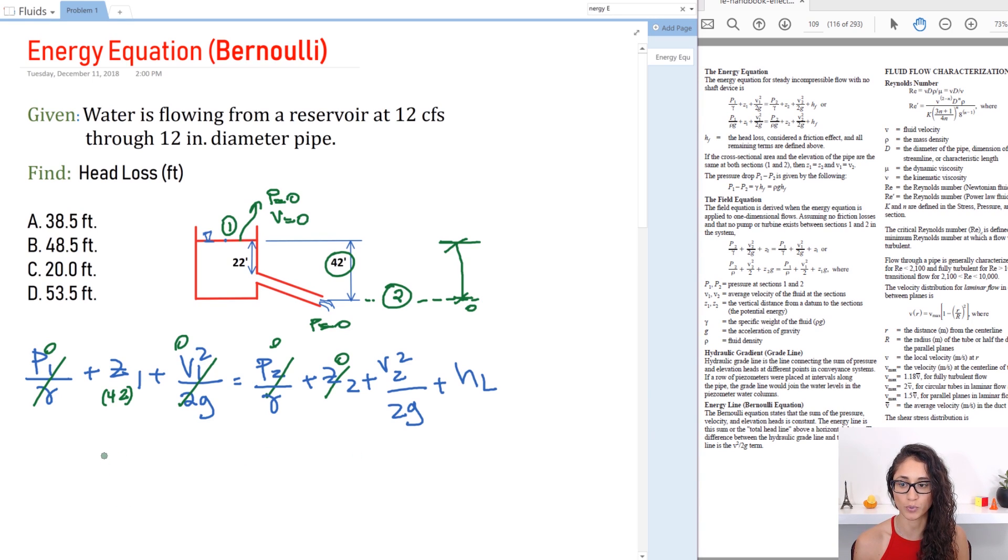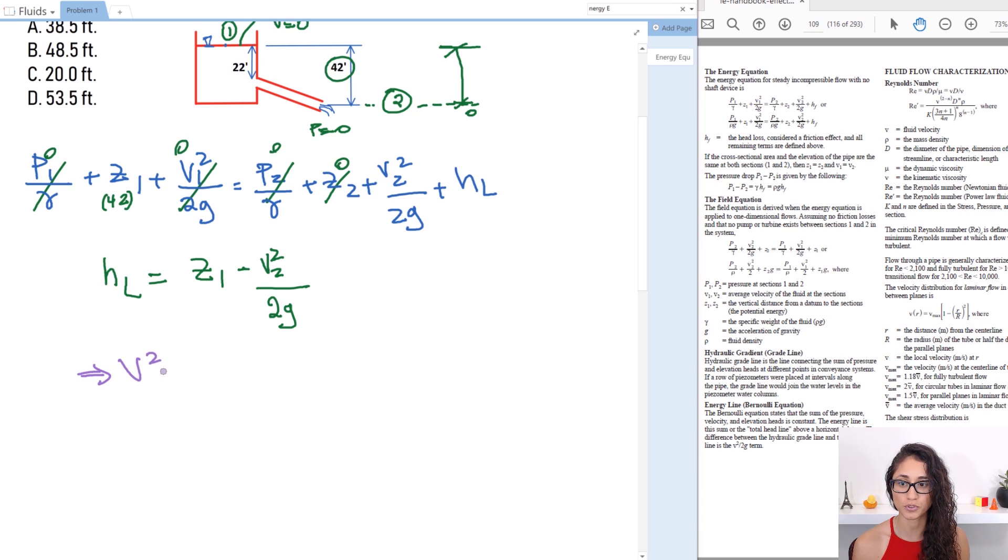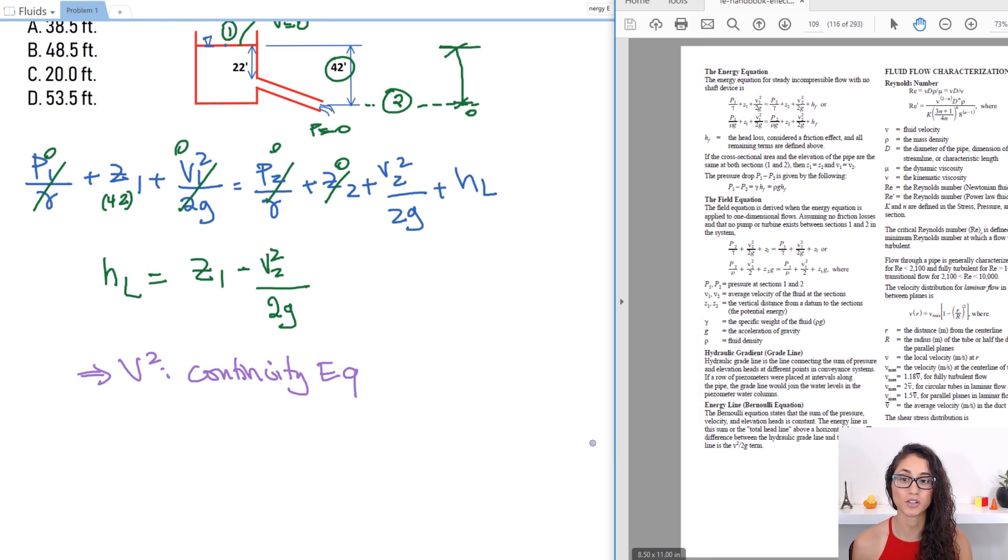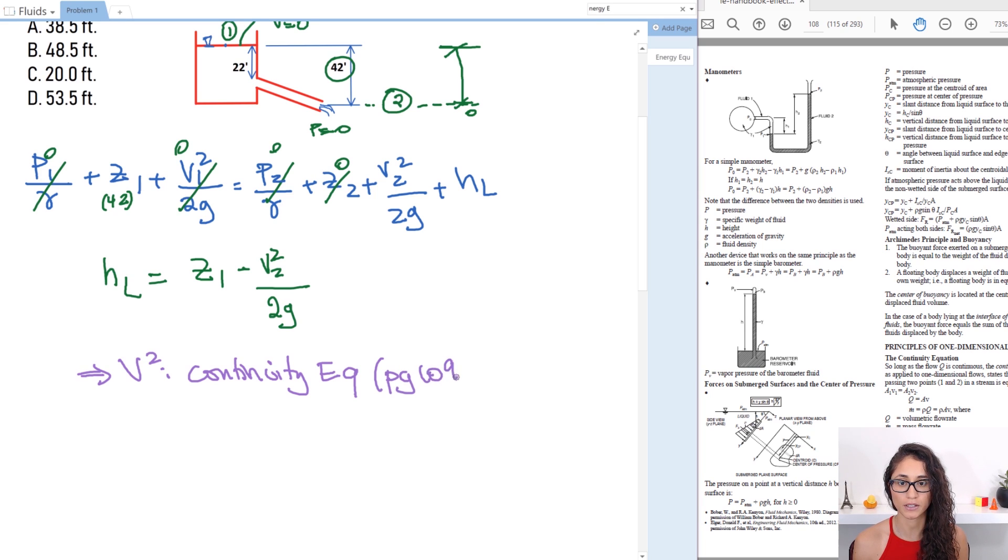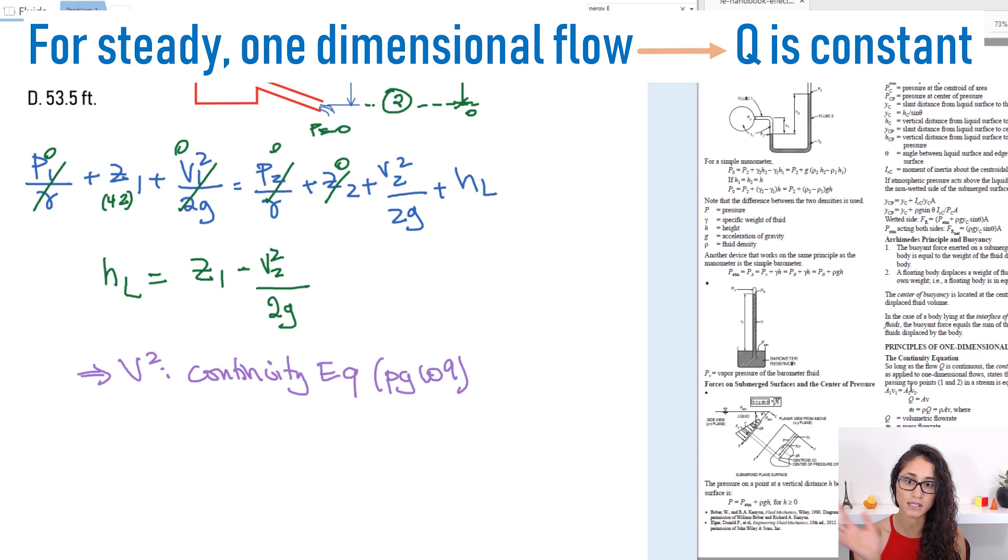So let's rewrite this equation. So we have head loss is equal to Z1 minus V2 squared over 2g. To solve for V2 we're going to use the continuity equation. So that equation is on page 109 so I'm going to write it down here. This is page 109 and so they tell you that when you have water that's flowing through a pipe the area times V or the flow rate is constant is continuous so which means A1 times V1 is equal to A2 times V2.